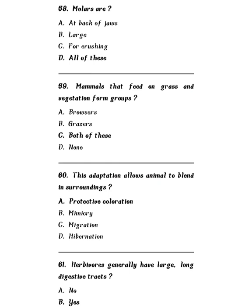Question 59: Mammals that feed on grass are vegetarians from — grazers, browsers, both browsers and grazers, or none of the above? The correct answer is browsers and grazers. Question 60: This adaptation allows an animal to blend in with its surroundings — protective coloration, mimicry, migration, or hibernation? The correct answer is protective coloration. Question 61: Herbivores generally have large and long digestive tracts — yes, absolutely right.